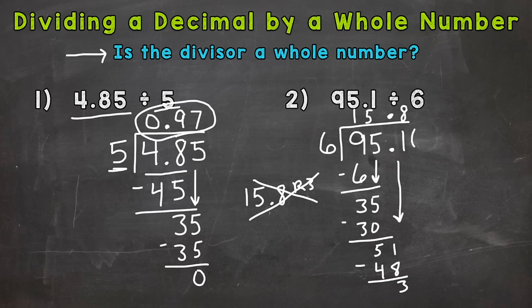Place a 0 on the end of 95 and 1 tenth, because placing 0s at the end of a decimal does not change the value. That's an equivalent decimal. We did not change the problem at all. So now we have something to bring down. So if you ever get stuck there, place a 0 on the end and bring that down.